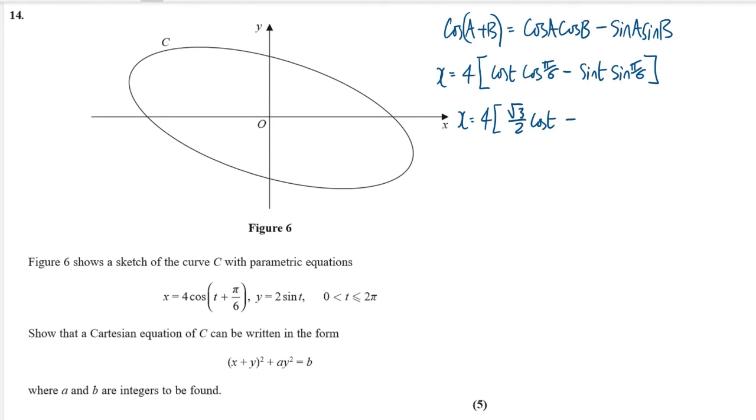The sine of 30 or pi over 6 is a half. So this becomes a half sine t. Okay, I can rewrite that as multiplying 3 by 4. I'm going to get 2 root 3 cos t and I'm going to get 4 times a half is 2. So 2 sine 2t.